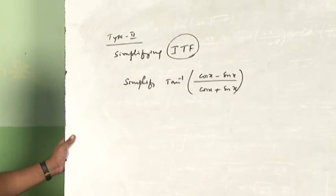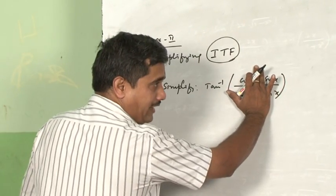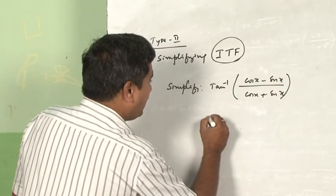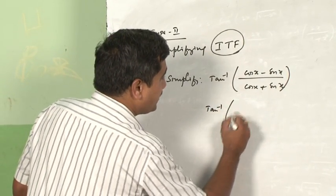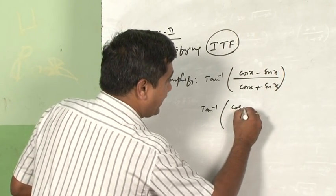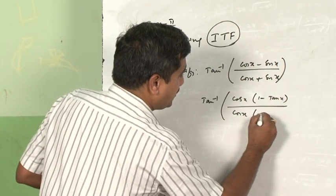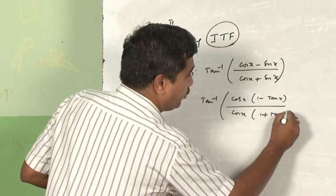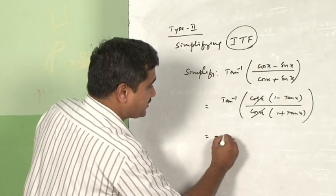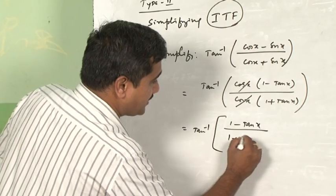It is quite interesting. The inverse trigonometric function — whatever you have inside the bracket — is a very interesting derivation. I write tan⁻¹ and take cos from both numerator and denominator. What I get is tan⁻¹((1 − tanx)/(1 + tanx)). The cos and cos cancel, giving tan⁻¹((1 − tanx)/(1 + tanx)).